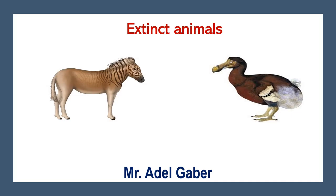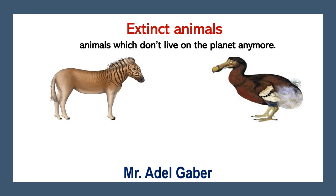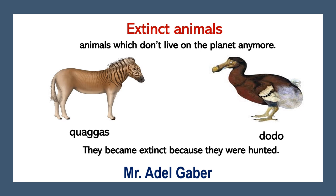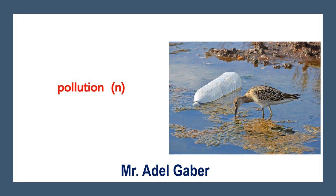Look at these two pictures. They are extinct animals. Extinct animals are animals which don't live on the planet anymore, like the quagga and the dodo. They became extinct because they were hunted. Now look at this picture — what is the problem in this picture? Yes, it is pollution.